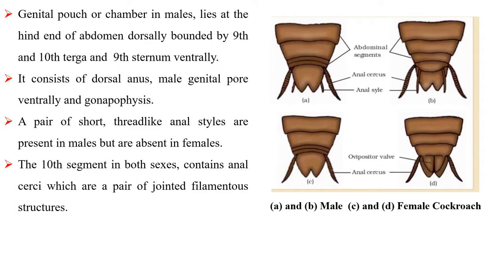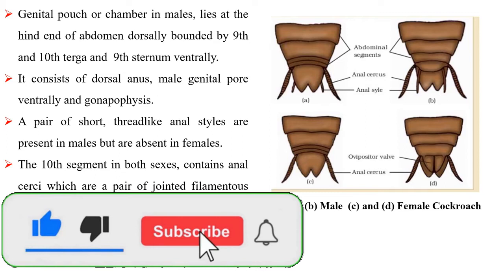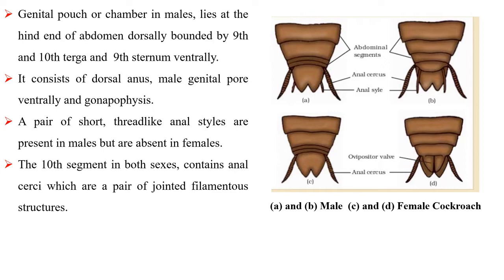A pair of short thread-like anal styles are present in males but are absent in females. The tenth segment in both sexes contains anal cerci, which are a pair of jointed filamentous structures.